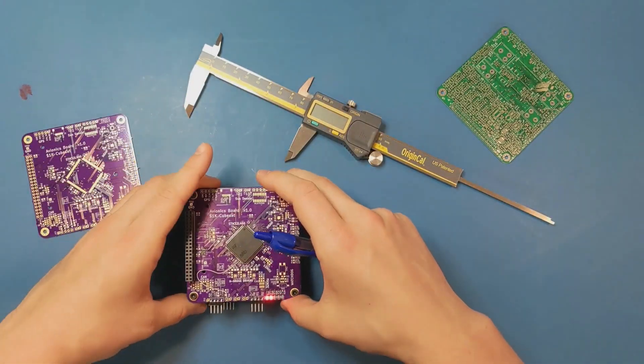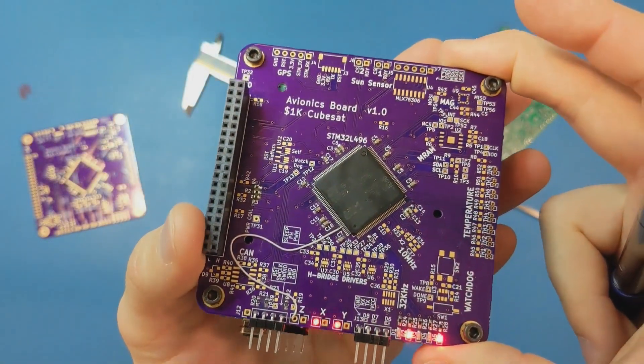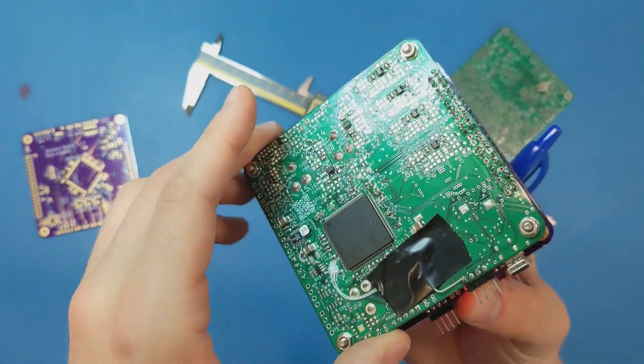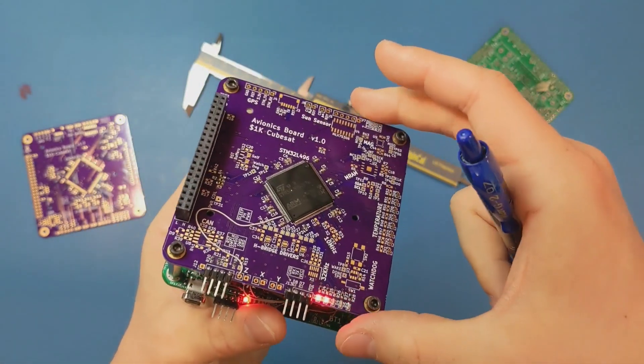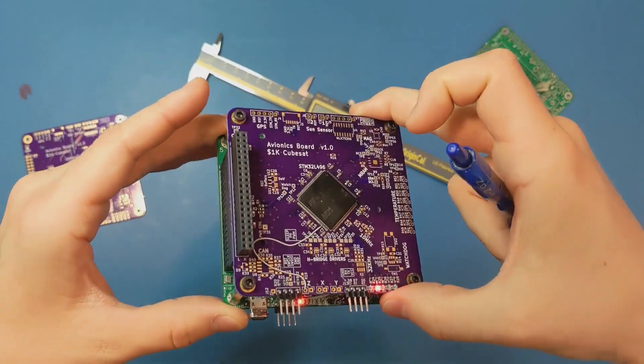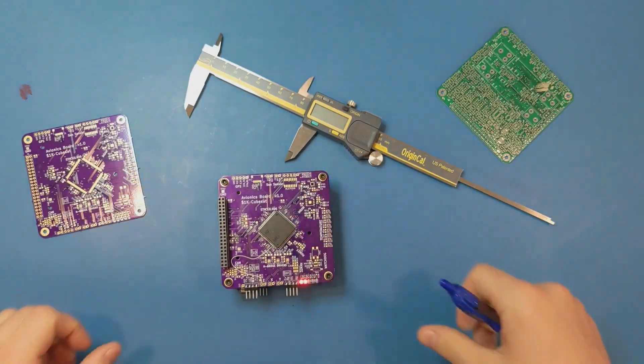Anyway, this board has an STM32 microcontroller on it, the same model of microcontroller that I use on the EPS board. That just makes it easier for me to write software. I don't have to worry about writing software for two different targets.